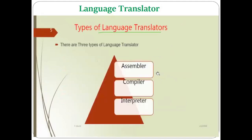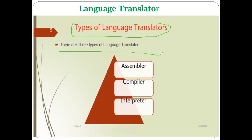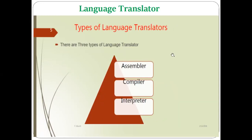Next, the types of language translators. There are three main types: first is the assembler, second is the compiler, and third is the interpreter. These are mainly considered the types of language translator. The assembler, compiler, and interpreter are all system programs which do the work of translation from one form of language into another form.